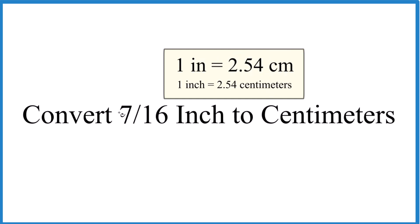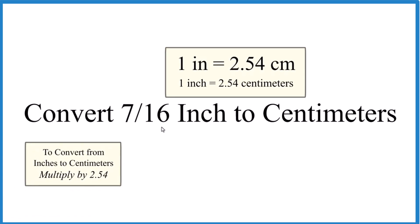That means all we really need to do is multiply 7/16 of an inch by 2.54, and then we have centimeters. For 7/16 of an inch, it might be easier to convert this to a decimal.